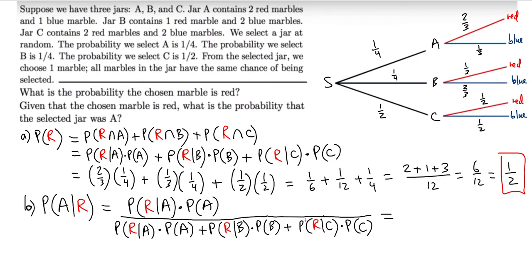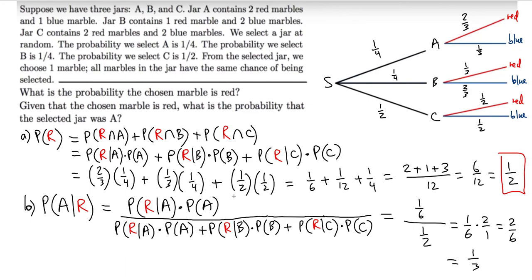We already have all the values from part one. The numerator is P(R|A)·P(A), which is one-sixth. The denominator is the total probability of red, which we found to be one-half. So P(A|R) equals one-sixth divided by one-half, which is one-sixth times two, giving us two-sixths, or one-third. The probability that you selected jar A, given that you chose a red marble, is one-third.